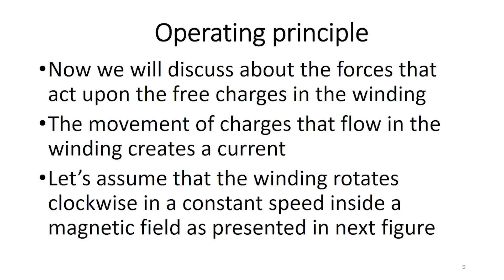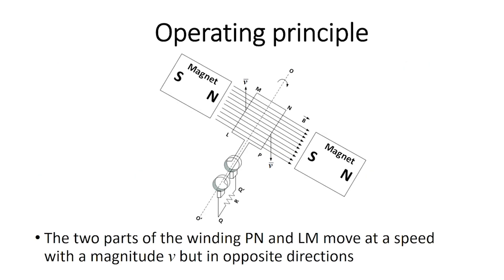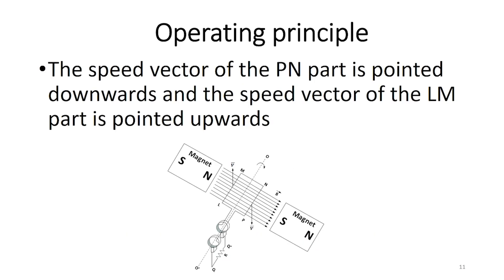Let us assume that the winding rotates clockwise in a constant speed, inside the magnetic field as presented in the figure. The two parts of the winding, Pn and Lm, move at a speed with a magnitude V, but in opposite directions. The speed vector of the Pn part is pointed downwards, and the speed vector of the Lm part is pointed upwards.